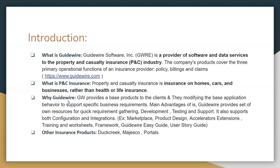Why Guidewire? Guidewire provides an end-to-end insurance lifecycle base product to clients, and clients usually modify the base applications based on their own specific requirements. Guidewire has a lot of advantages and functionalities. Whenever clients buy a Guidewire product, they can modify it accordingly and implement only those features into their applications. One of the main advantages is that Guidewire provides a set of its own resources.